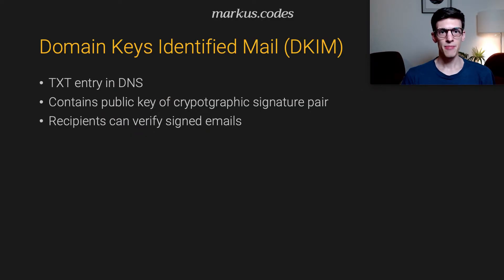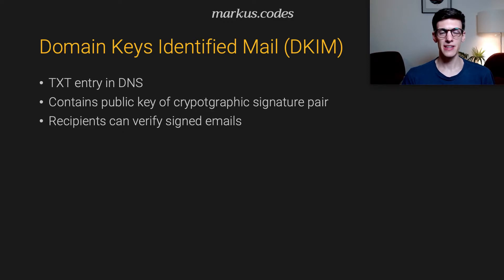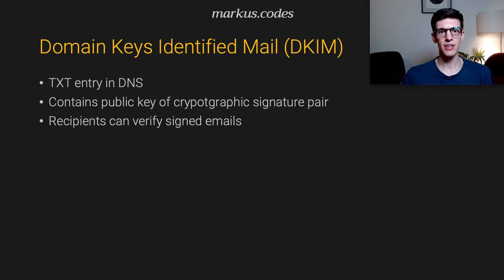Basically DKIM, or Domain Keys Identified Mail, is another text record within your DNS, just like SPF that has been covered in the previous episode. What that record includes is the public key of your cryptographic key pair, and with the other part you can then sign your email messages. It is then possible for the recipient to verify that signature using the public key.